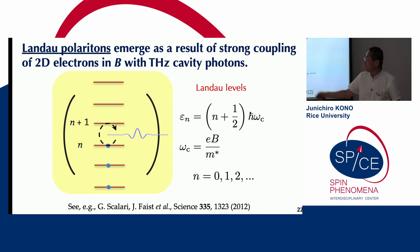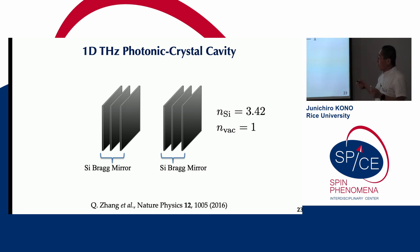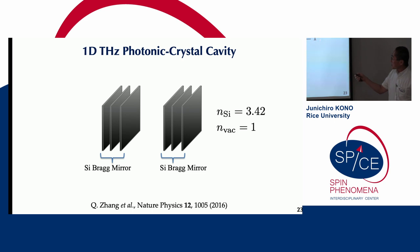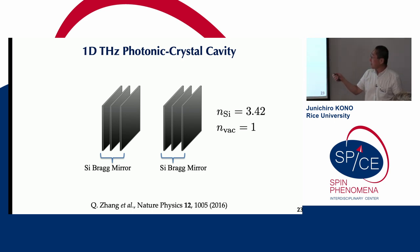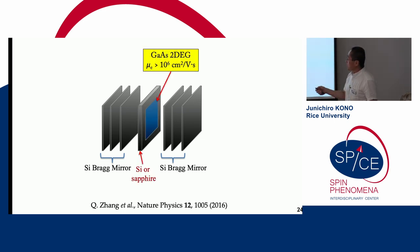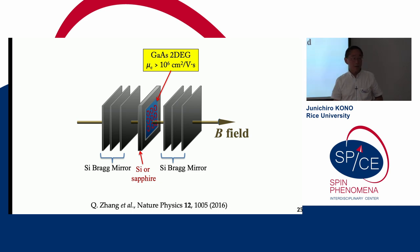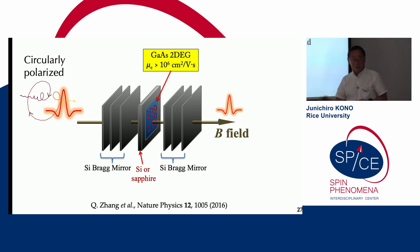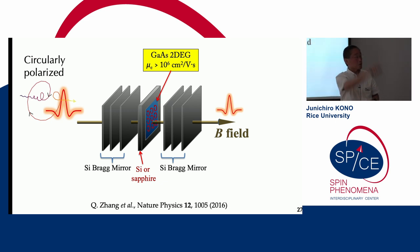By changing the magnetic field, we can continuously tune the cyclotron frequency to go into and out of resonance with the cavity photonic frequency. Realistically, we use one-dimensional terahertz photonic cavities using alternating layers of silicon and vacuum. Because of the large index difference between silicon and vacuum, just a few layers on each side make a very good cavity. We place a material inside the cavity, apply a DC magnetic field to Landau-quantize the 2D electron gas, then probe with very weak circularly polarized terahertz electromagnetic fields. The circular polarization is important because the magnetic field produces a circular motion of electrons.